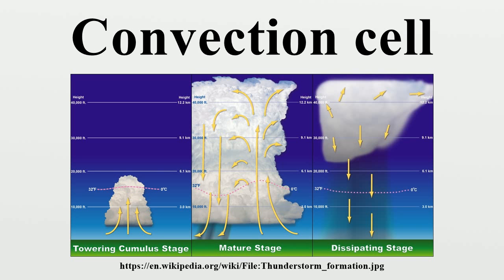If enough instability is present in the atmosphere, this process will continue long enough for cumulonimbus clouds to form, which support lightning and thunder. Generally, thunderstorms require three conditions to form: moisture, an unstable air mass, and a lifting force.